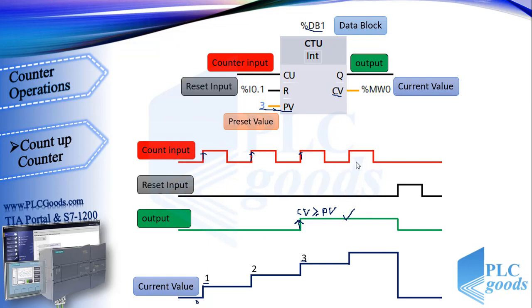After this moment, if we have another positive pulse, the output will remain on but the counter value increments by 1. The counter continues its counting until a positive signal edge appears at its reset input. At that moment, the output goes to off and the current value changes to 0.